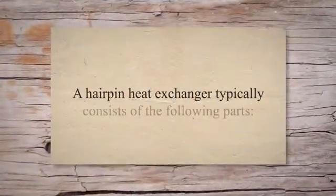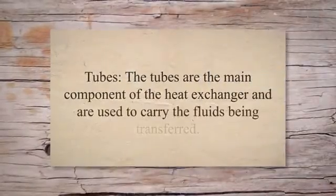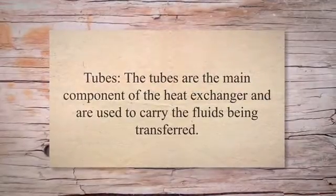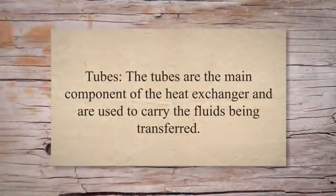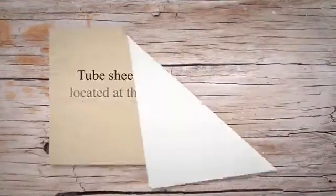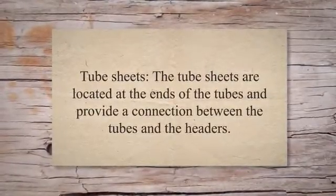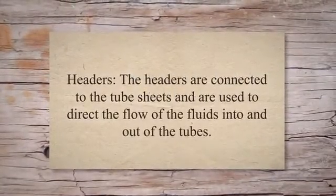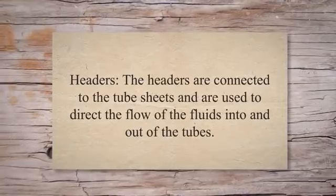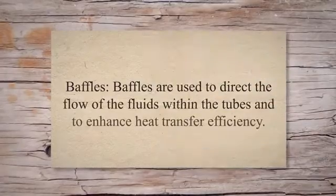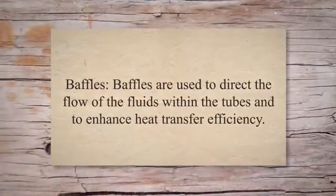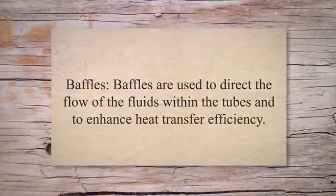A hairpin heat exchanger typically consists of the following parts: tubes, which are the main component used to carry the fluids being transferred; tube sheets, located at the ends of the tubes to provide a connection between the tubes and the headers; headers, which are connected to the tube sheets and direct the flow of fluids into and out of the tubes; and baffles, which direct fluid flow within the tubes and enhance heat transfer efficiency.